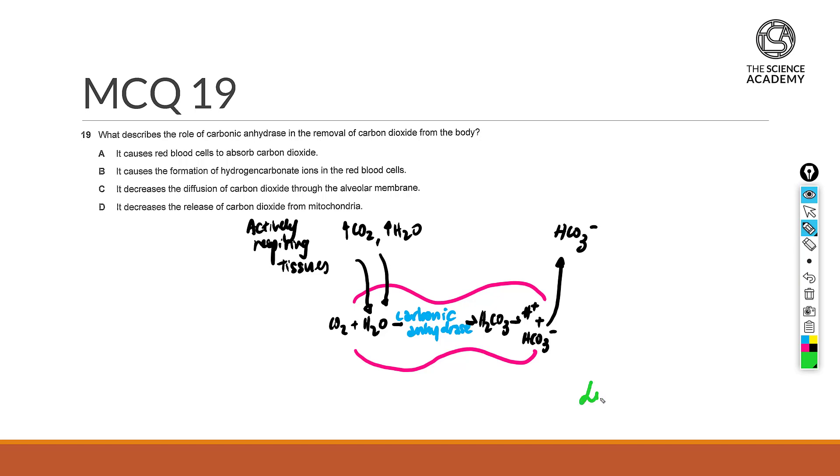At the lungs, the hydrogen carbonate ions that have traveled together with the red blood cell diffuse back into the red blood cells, combining spontaneously with H+ to reform into carbonic acid. In the presence of carbonic anhydrase, it will take on the role of a catabolic enzyme to break down your carbonic acid into H2O and CO2.